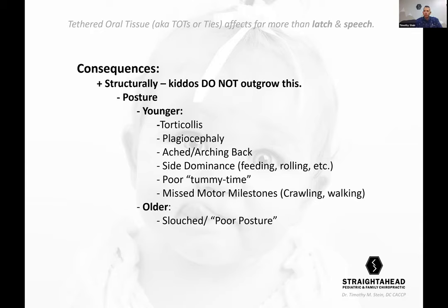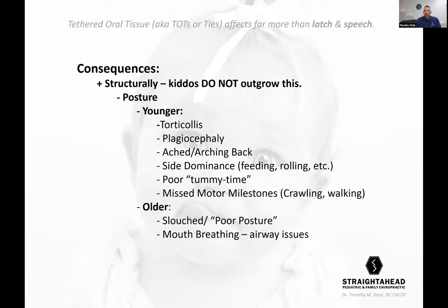Poor tummy time: kids with tight fascia pulling them into flexion don't like extension because they can't fully extend. They're not good at cervical extension, so they just face plant a whole bunch of times. Then missed motor milestones — crawling, walking. Tummy time is crucial and pivotal. It is probably the most important thing post-revision, other than chiropractic first and tummy time second.